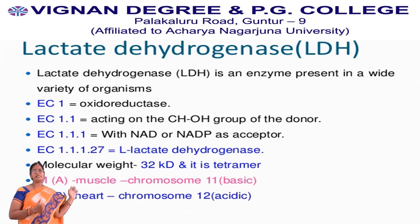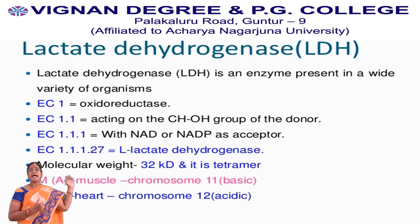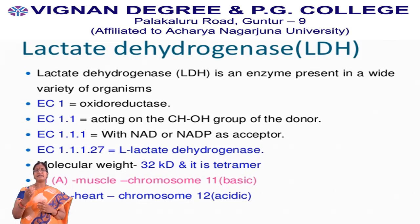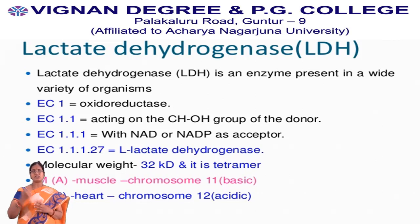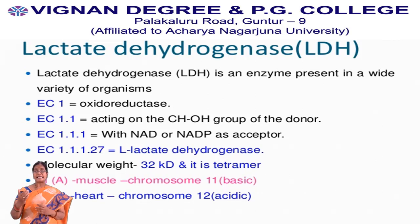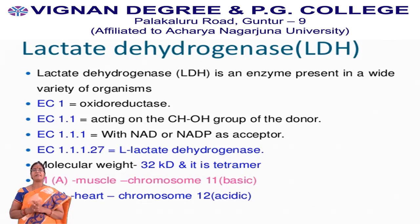Coming to the features: it has a molecular weight of 32 kilodaltons and it is a tetramer. Tetramer means it is made up of 4 polypeptide chains. This tetramer exists in two types: M type and H type. M indicates it belongs to muscle — it is specific for muscle. H means heart.